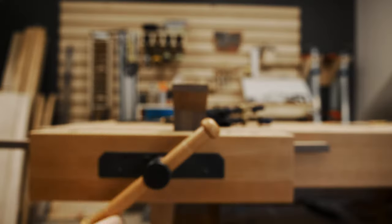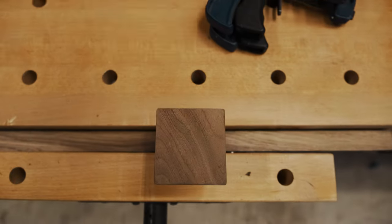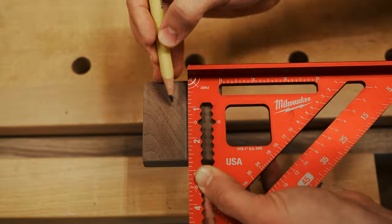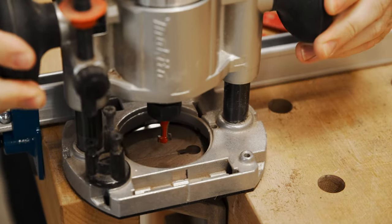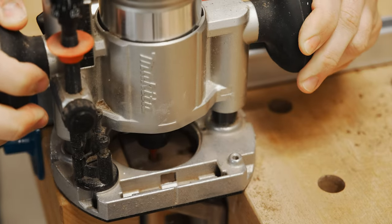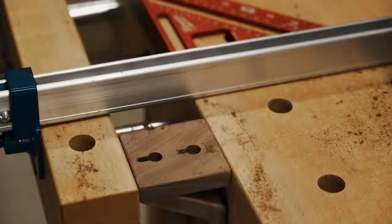Once that dries, we're gonna stick it in the vise and locate the center line. We're going to route in two keyholes, and this is going to keep it from spinning around when in use. One keyhole and it will probably spin around; two keyholes and it won't. Did I just say the same thing twice both in equally dumb ways? Yes, I did.